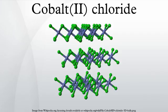Cobalt chloride is an inorganic compound of cobalt and chlorine, with the formula CoCl2. It is usually supplied as the hexahydrate CoCl2·6H2O, which is one of the most commonly used cobalt compounds in the lab.